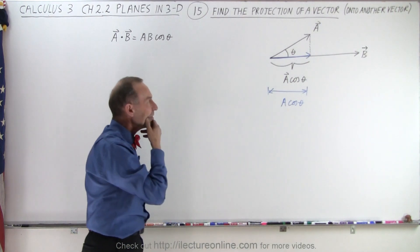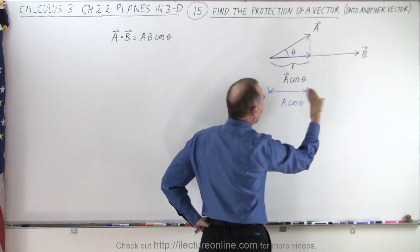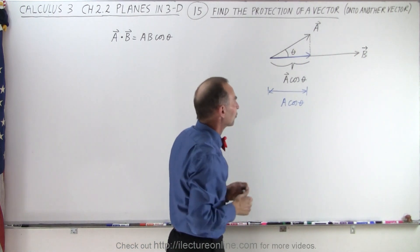So in essence, if we want to know just A times the cosine of theta, and we want to use the dot product, we should do the dot product with the unit vector B.